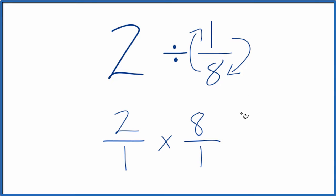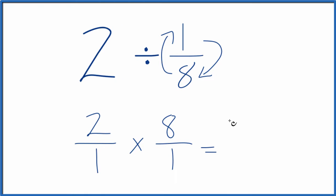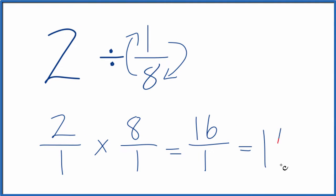Now when we're multiplying fractions, we just multiply the numerators and then we multiply the denominators. That'll give us our answer. 2 times 8, that's 16. 1 times 1 is 1. And 16 divided by 1, that's just 16.